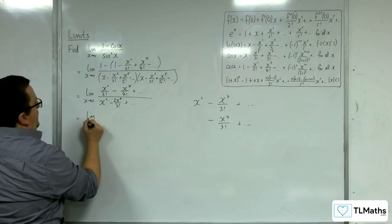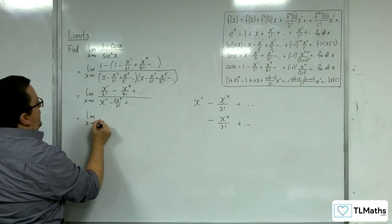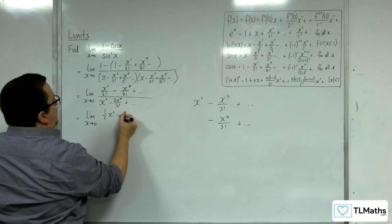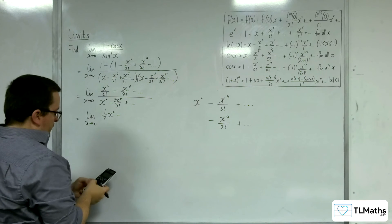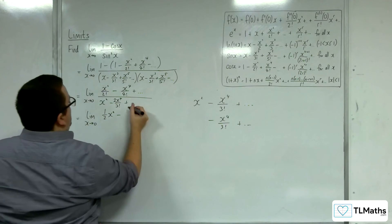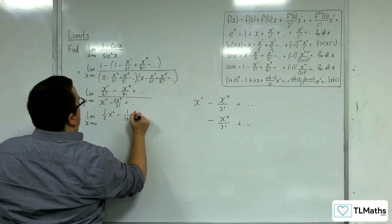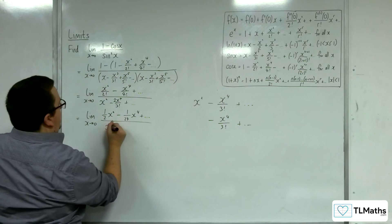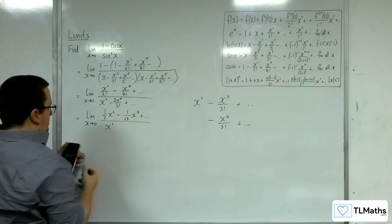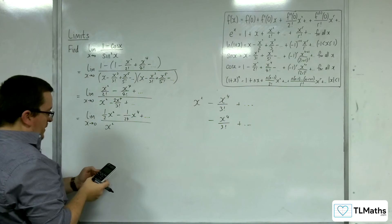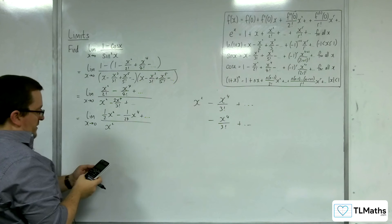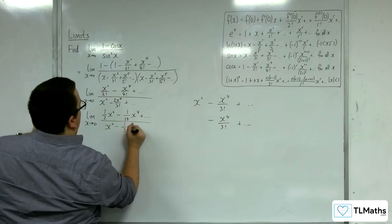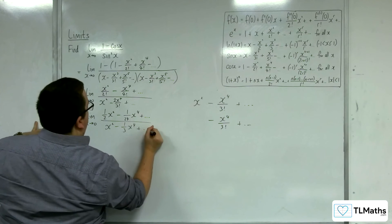Simplifying the fractions: the numerator becomes ½x² minus (1/24)x⁴ plus etc., and the denominator becomes x² minus (1/3)x⁴ plus etc. Since 2 divided by 3! is 2/6 = 1/3.